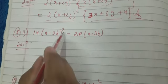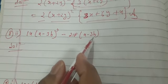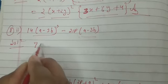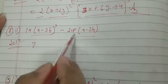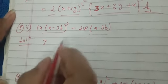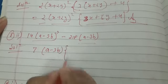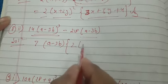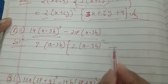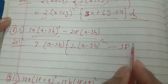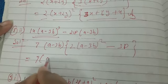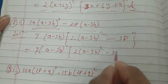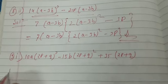Question 8(ii): 14 into (a minus 3b) whole cube minus 21p into (a minus 3b). We take common factors: 14 and 21 are both multiples of 7, so take 7 as common. P is not in both terms so we cannot take P as common. (a minus 3b) appears in both terms — cube in the first, single in the second — so we take one (a minus 3b) as common. What remains is 7 into (a minus 3b) into [2(a minus 3b)² minus 3p]. This is the answer.